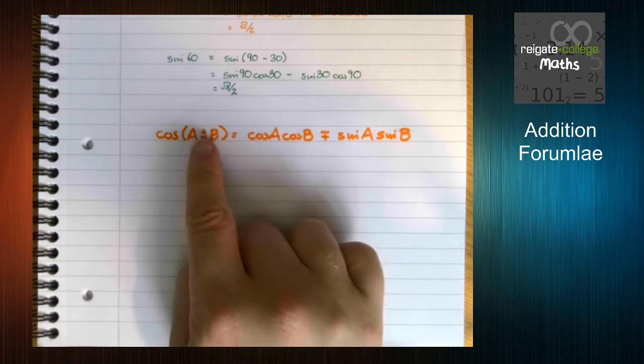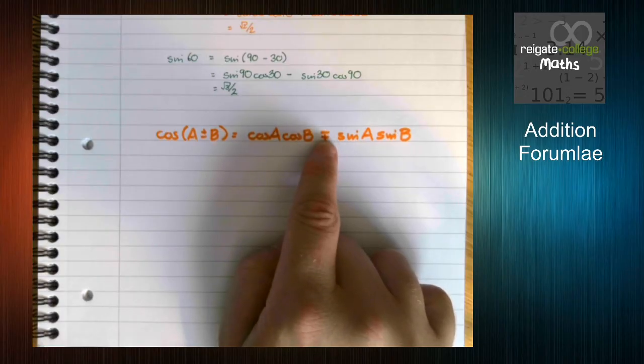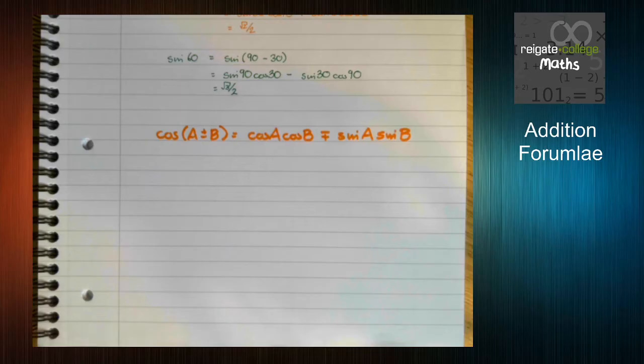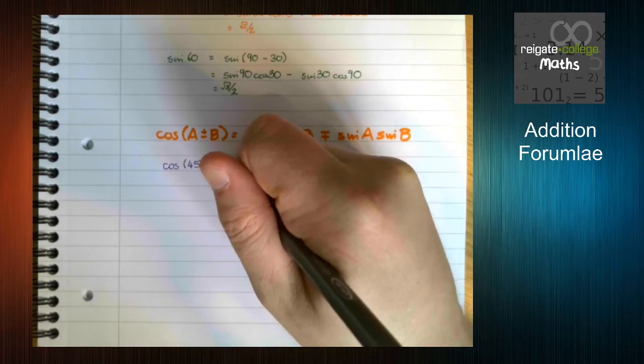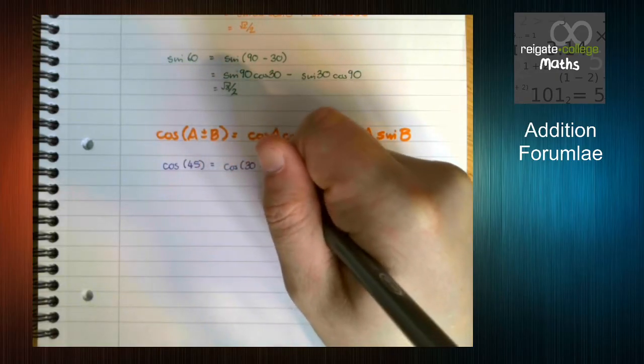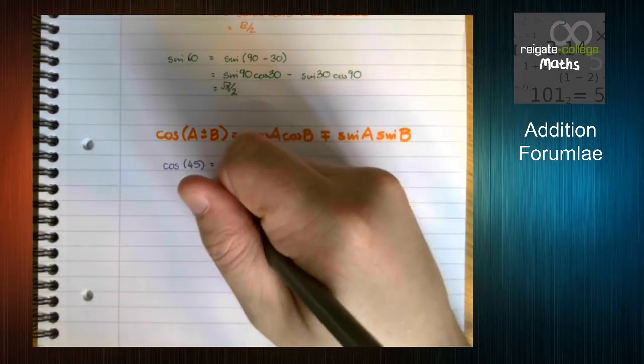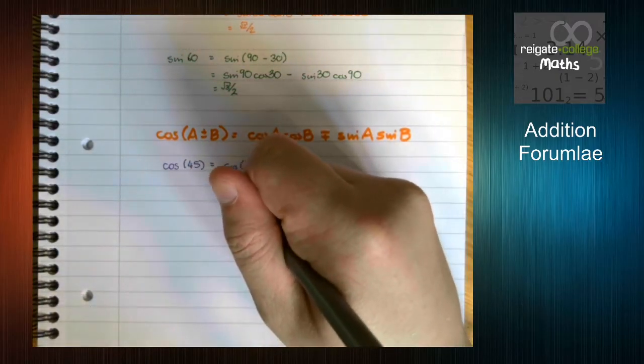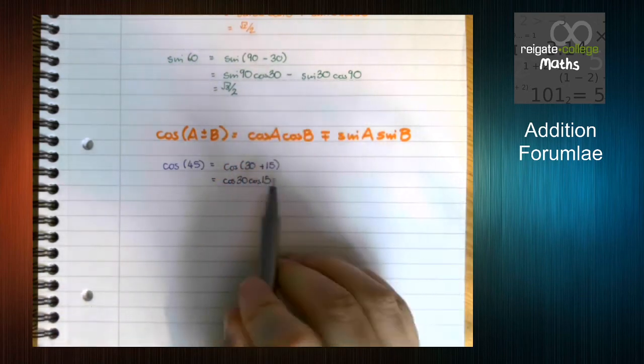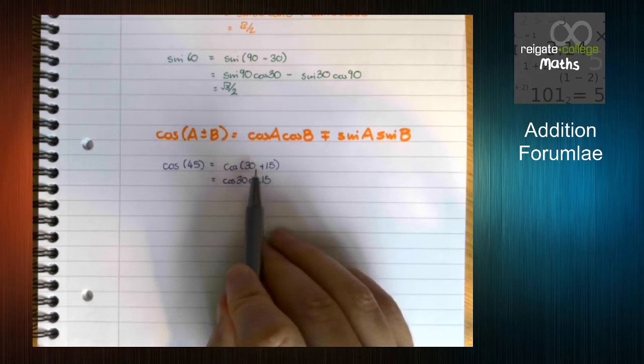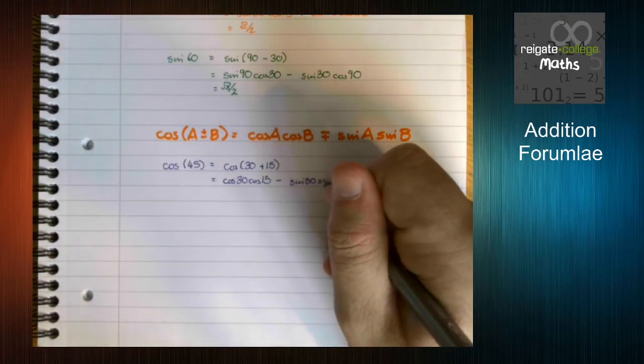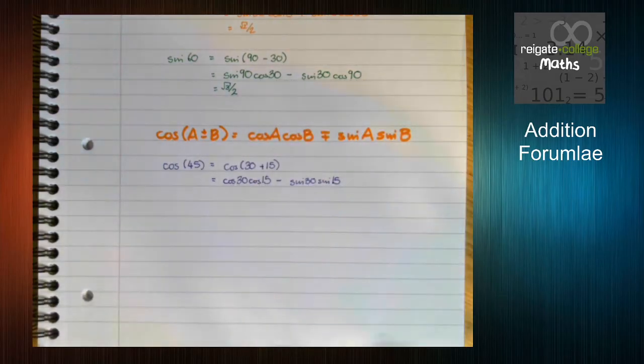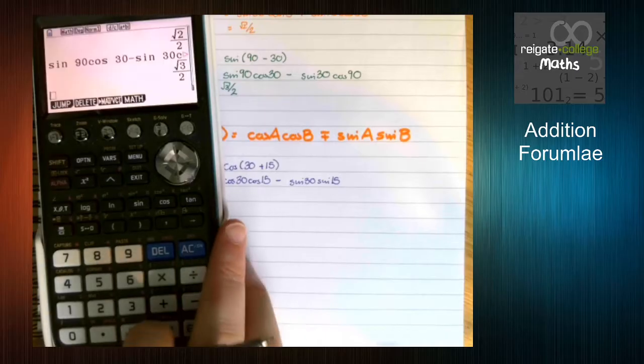So again, let's try that with some numbers just to show what's going on. Cos 45, we can write as cos 30 plus 15. Cos 15, like we did before. So using the formula, this is going to be cos 30 cos 15. Now this is where it differs. Here we have a plus, so here we have a minus.